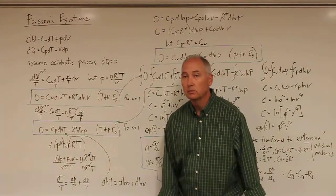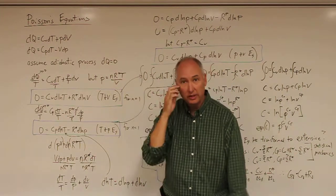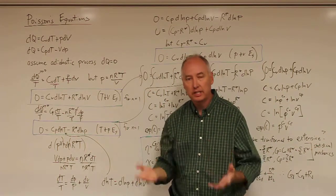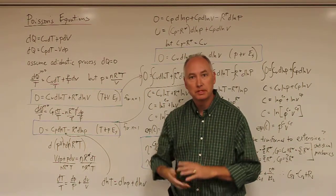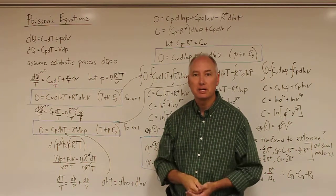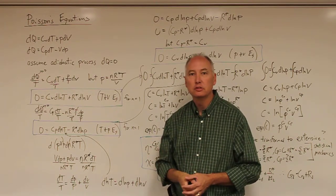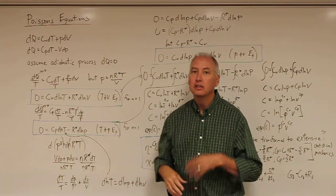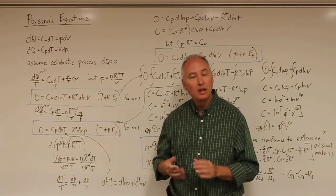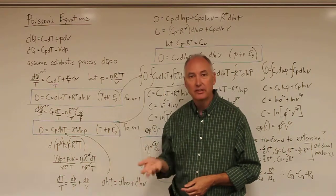In this lecture, we're going to derive Poisson's equations, which will basically extend the equation for potential temperature, which was for adiabatic processes. The potential temperature allowed you to easily calculate the temperature or the pressure of an air parcel as it was moved adiabatically in the atmosphere.